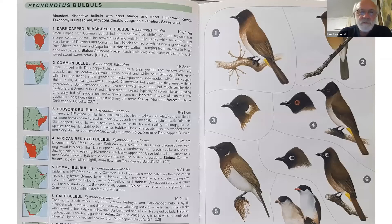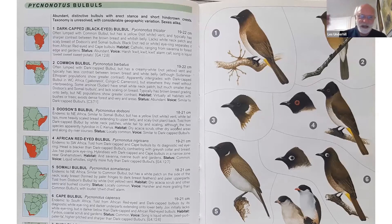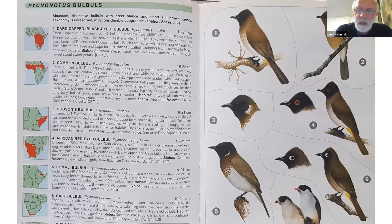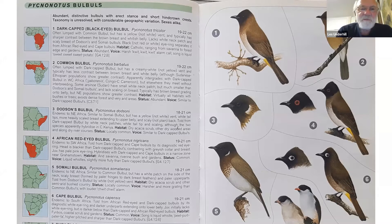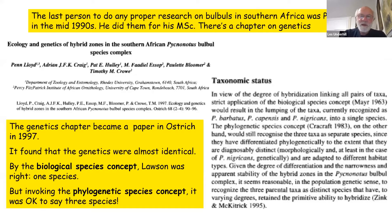Here's the book Birds of Africa South of the Sahara — I apologize to the authors for not properly acknowledging it in this slide. Here are the six bulbuls in Africa. We start with the Somali Bulbul, then go anti-clockwise: Dodson's Bulbul, Somali Bulbul, Common Bulbul, Dark-capped Bulbul, African Red-eyed Bulbul, and ending with the Cape Bulbul. These are all very closely related species.